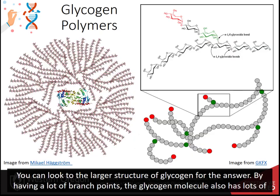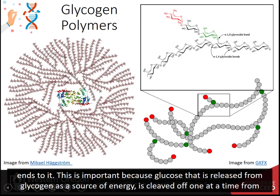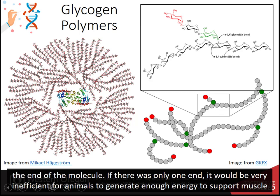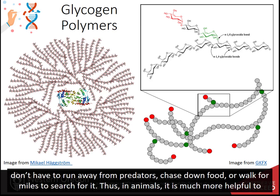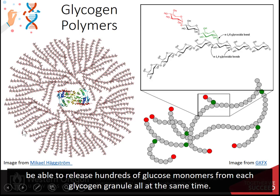Why is this important? By having many branch points, the glycogen molecule also has many ends. Glucose released from glycogen as a source of energy is cleaved one at a time from the ends of the molecule. If there was only one end, it would be very inefficient for animals to generate enough energy to support muscle contraction and movement. Plants can get away with fewer ends because they don't have to run from predators or chase food. In animals, it is much more helpful to release hundreds of glucose monomers from each glycogen granule simultaneously.